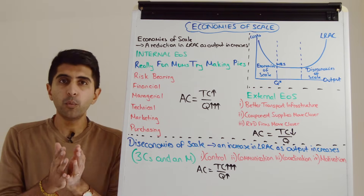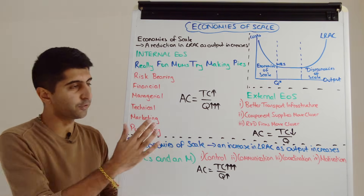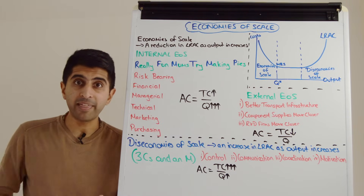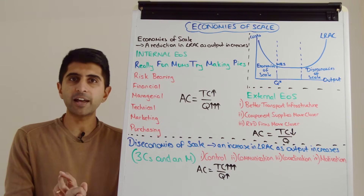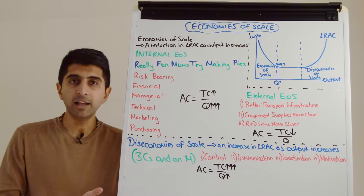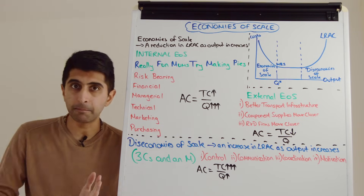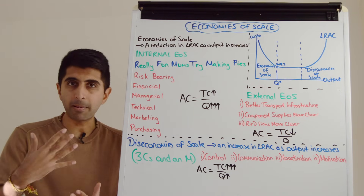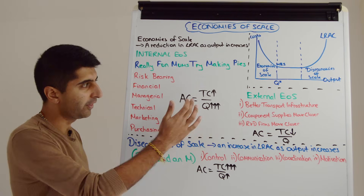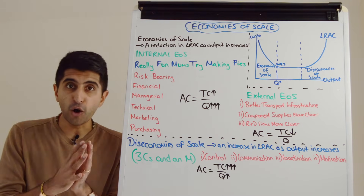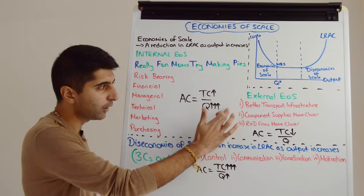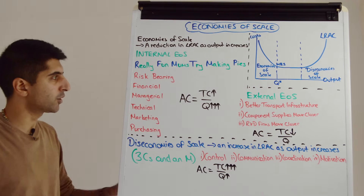A very similar concept applies to marketing economies of scale. As a company grows larger they could bulk buy their advertising — instead of one TV advert, one billboard, or one magazine advert, they can bulk buy and as a result they negotiate better unit rates of advertising. Therefore they can spread their advertising costs over a larger range of output, meaning total cost is rising slower than quantity is rising, bringing down average cost.